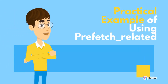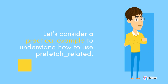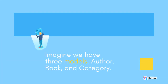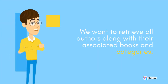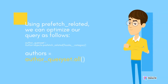Let's consider a practical example to understand how to use prefetch_related. Imagine we have three models: Author, Book, and Category. The models have many-to-many relationships, where an author can have multiple books, and a book can belong to multiple categories. We want to retrieve all authors along with their associated books and categories. Using prefetch_related, we can optimize our query as follows: author_queryset = Author.objects.prefetch_related('books__category'); authors = author_queryset.all().